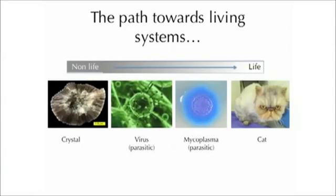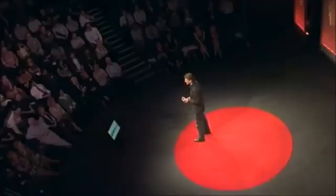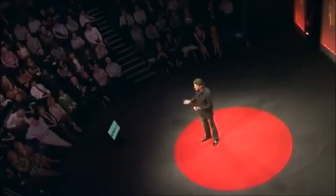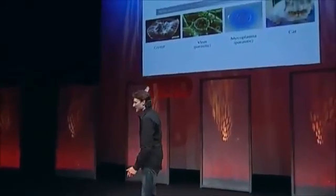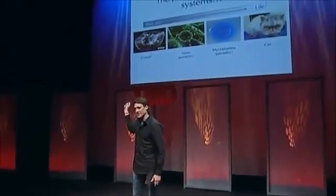We'll just take one example here. A virus is a natural system, but it's very simple, it doesn't really satisfy all the requirements, it doesn't really have all the characteristics of living systems, and it's in fact a parasite on other living systems in order to reproduce and evolve. But what we're going to be talking about here tonight are experiments done on the sort of non-living end of this spectrum.